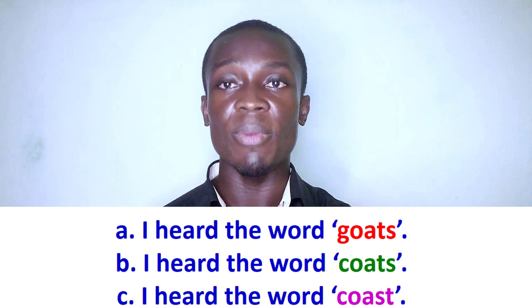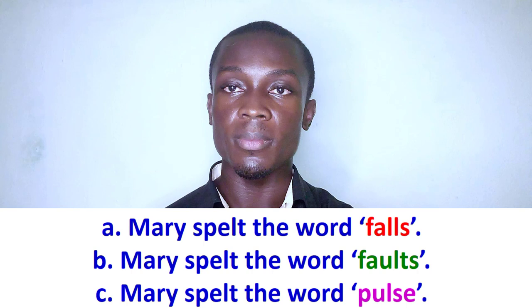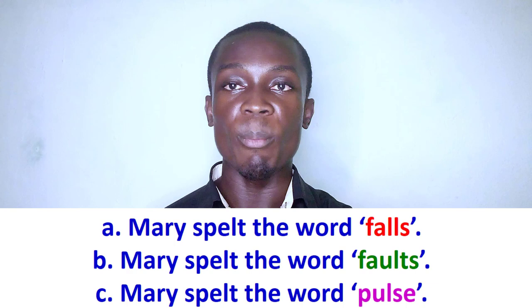Next example. Let's consider the following words: ghost, quote, coast. These words are going to be read in a sentence and it is up to you to determine the particular word the speaker has pronounced. Example: 'I heard the word coast.' The sentence I read is sentence C: I heard the word coast. Next example: 'Mary spelled the word pulse.' The sentence I read is sentence C: Mary spelled the word pulse.